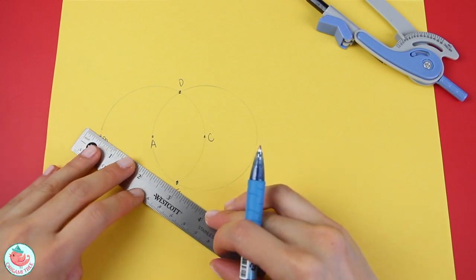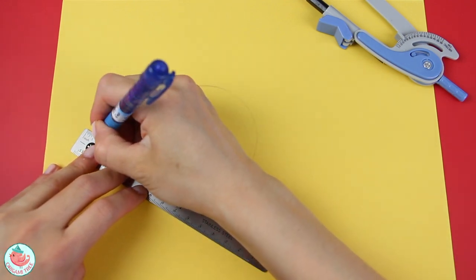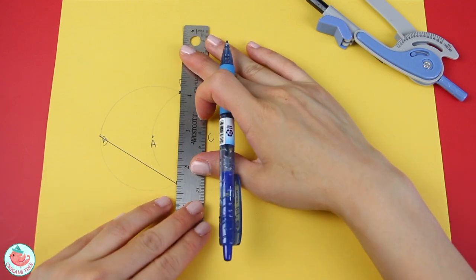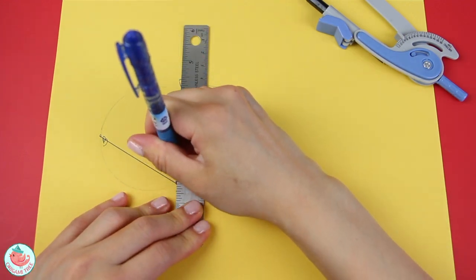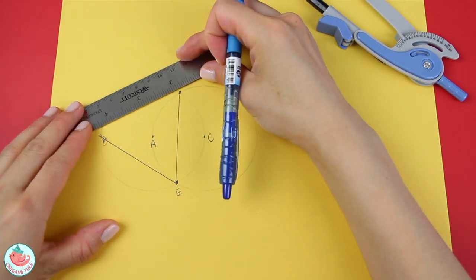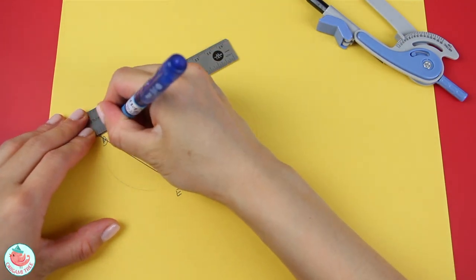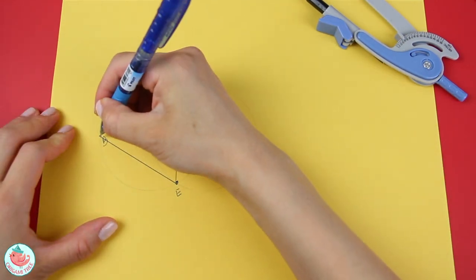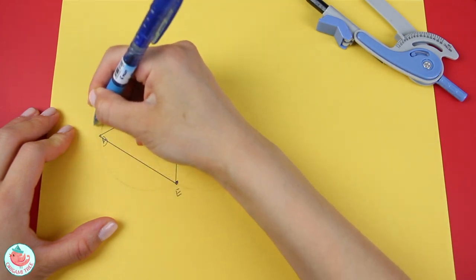So I'm going to connect B and E, D and E, and finally, B and D. And so now you have an equilateral triangle inside circle number one.